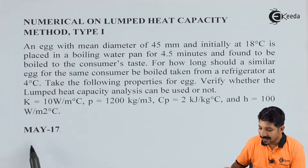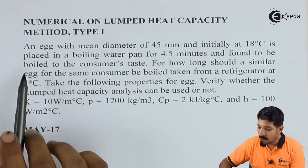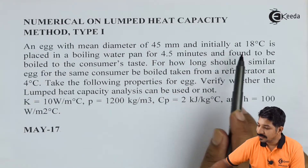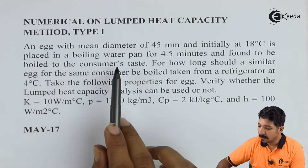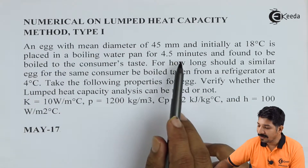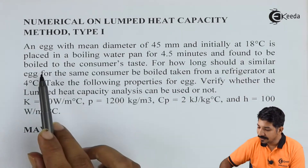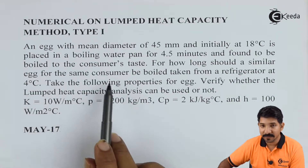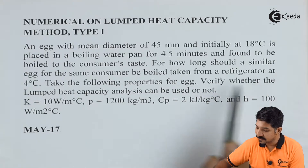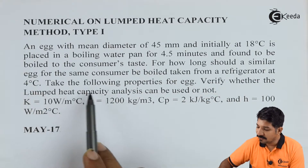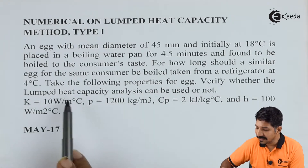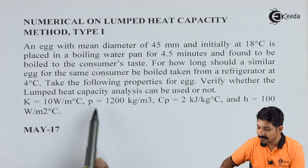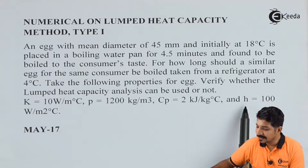Let us read a problem which was asked in May 2017 in Mumbai University. The problem says: an egg with a mean diameter of 47 mm, initially at 18 degrees Celsius, is placed in a boiling water pan for 4.5 minutes and found to be boiled to the customer's taste. For how long should a similar egg for the same consumer be boiled if taken from the refrigerator at 4 degrees Celsius? Take the following properties for the egg. Verify whether the lumped heat capacity analysis can be used or not. They have given us thermal conductivity, density, Cp, and heat transfer coefficient.